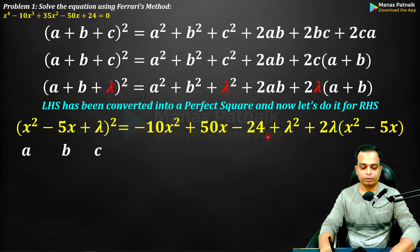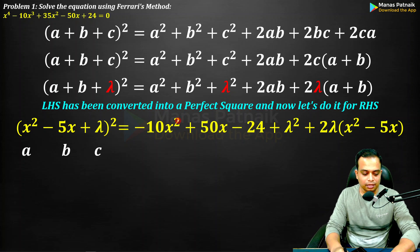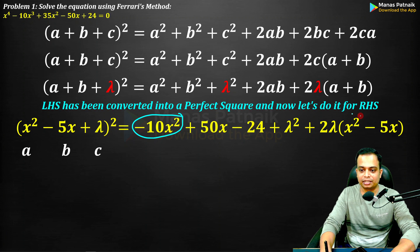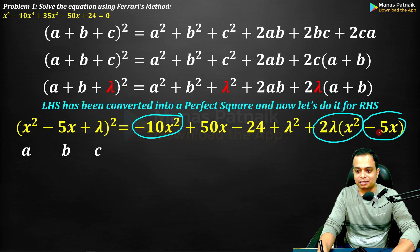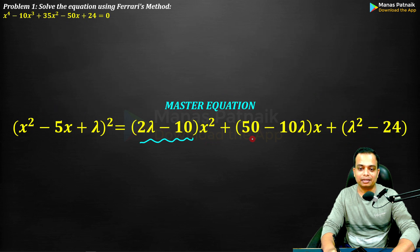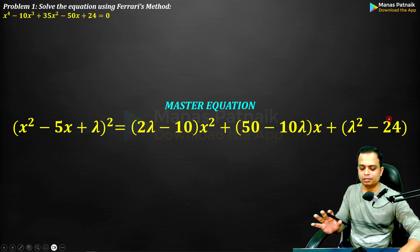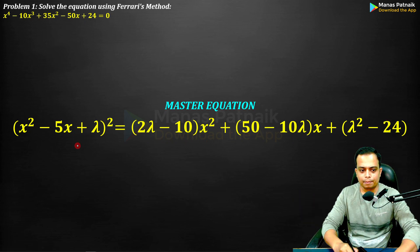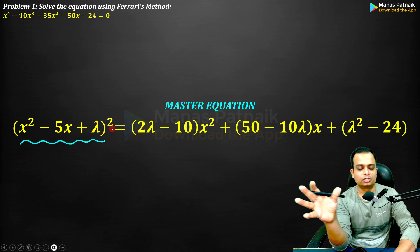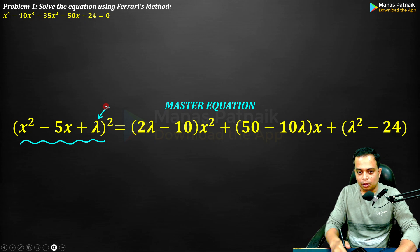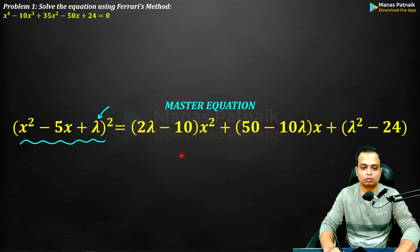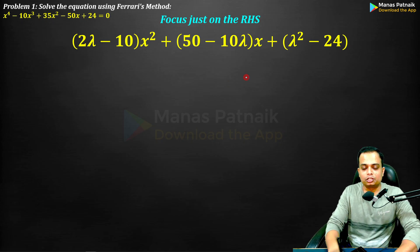Now simplify the RHS. The x² terms can be grouped — taking x² as common leaves (2·lambda − 10). Then take x as common from the x terms: (50 − 10·lambda). The remaining constant terms are organized accordingly. The LHS is already a perfect square. We have introduced lambda, whose value we still need to find. Just focus on the RHS.